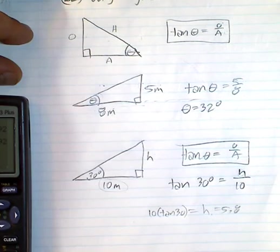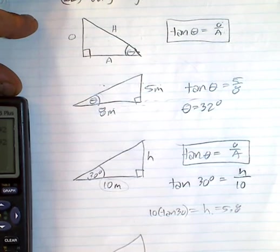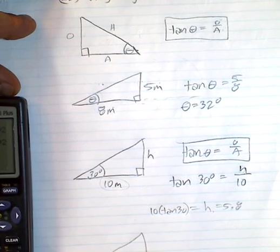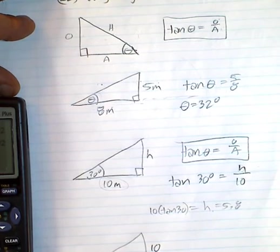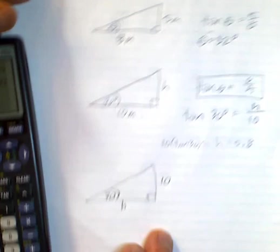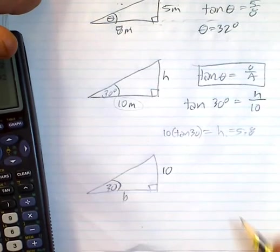Now there might be a similar situation where you are looking for the other side. You might be given this as 30 degrees, say this is 10. How big is this? Let's call it the base or x or whatever you want to call it.